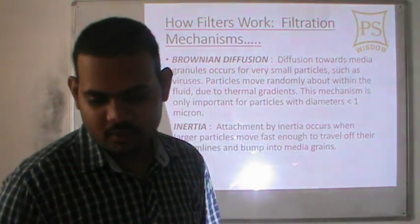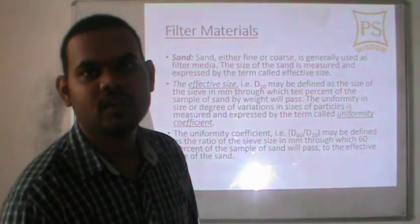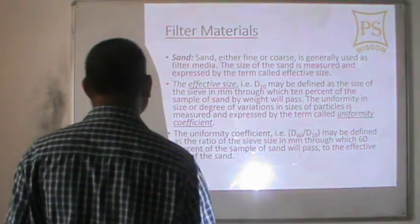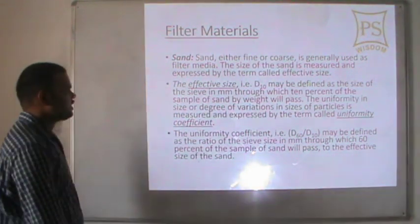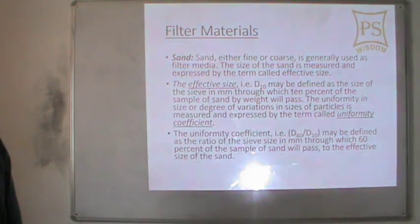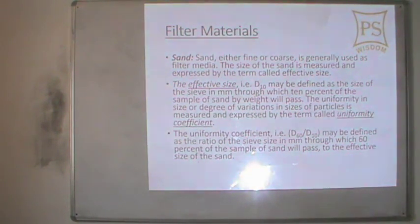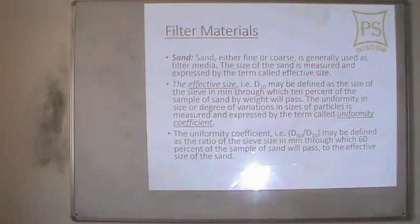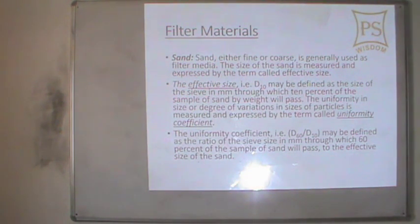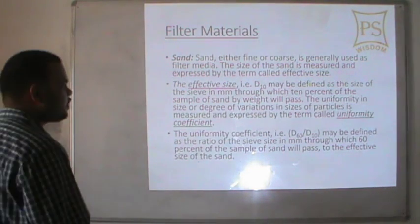Attachment by inertia occurs when larger particles move fast enough to travel off their streamlines and bump into the media grains. As for filter materials, sand — either fine or coarse — is generally used as the filter media. The size of sand is measured and expressed by the term called effective size, D10, which is defined as the sieve size in mm through which 10% of the sample sand by weight will pass.